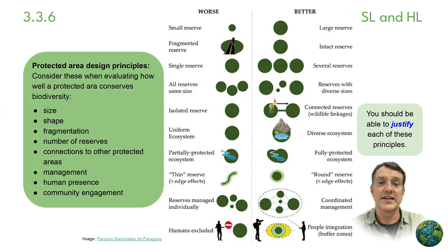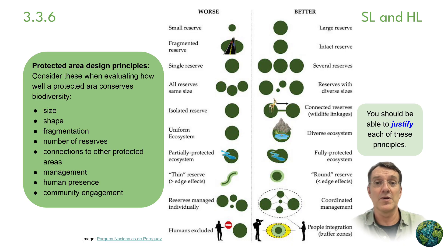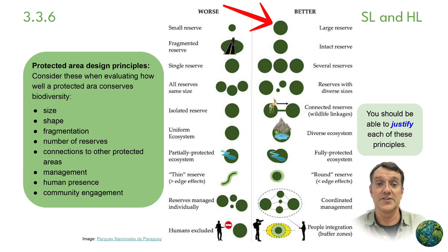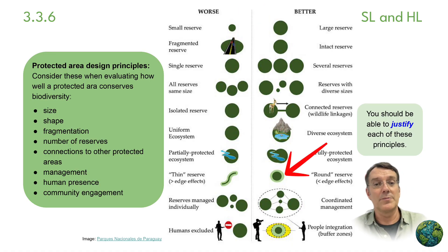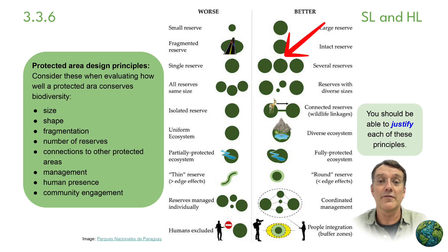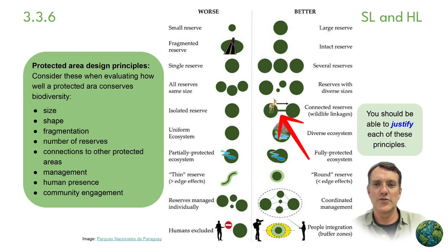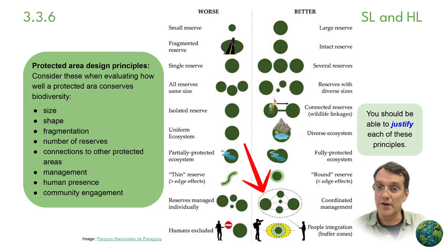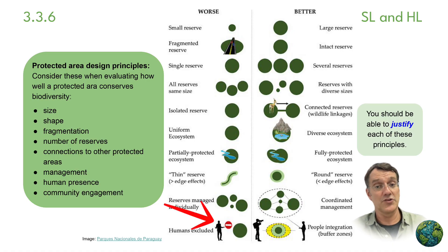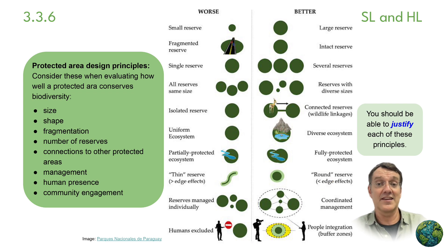The success of a protected area is linked to its design. Key design principles include: size — bigger is better; shape — rounder shapes reduce the edge effect; fragmentation — intact reserves are better than those disrupted by roads and infrastructure; the number of reserves — more is better than one, but one is better than none; connections to other protected areas, which promotes interbreeding and genetic diversity; management, which often includes funding; human presence — fewer people generally means fewer disruptions; and community engagement — the more surrounding communities stand to gain, the more successful the protected area will be.